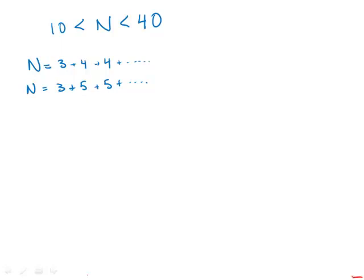So this is a really tricky problem. What we know is that N, the total number of members, is between 10 and 40, and it equals 3 plus some multiple of 4. I'm going to say 4k. Or in other words, we could write this as N minus 3 equals 4 times some k.